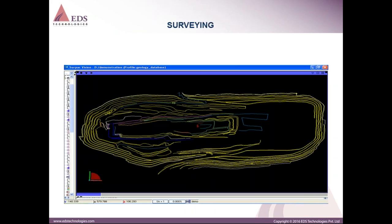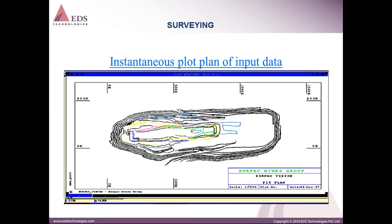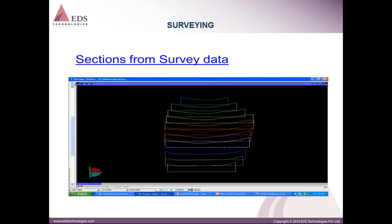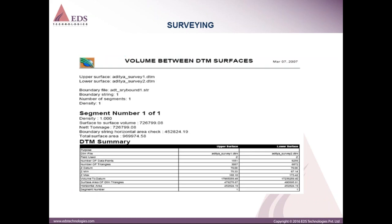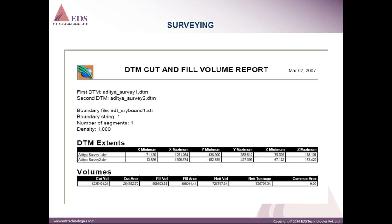Here is an example of a plot plan created in SURPAC from survey data inputted into the system. You can also extract various sections — horizontal, vertical, or oblique — from your survey data in any direction and generate contour plans at any interval as per your requirement. This screenshot shows a volume calculation from two DTM (digital terrain model) surfaces, and another example shows a cut and fill volume report.